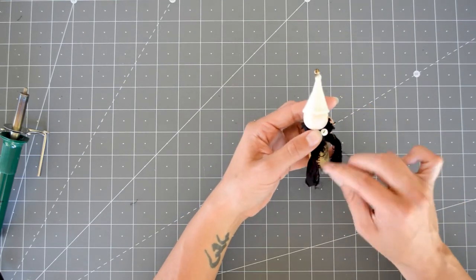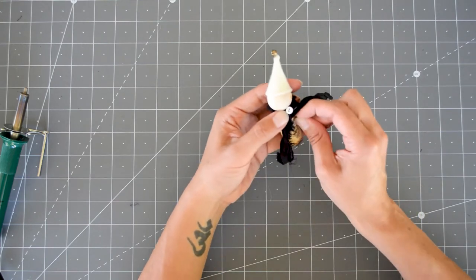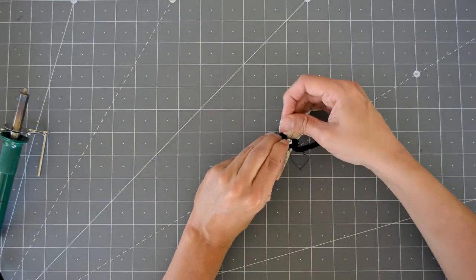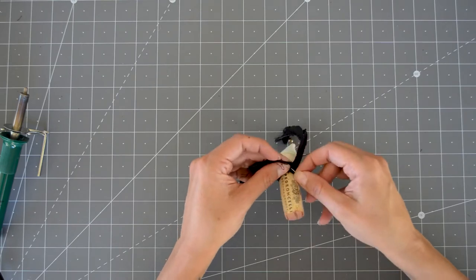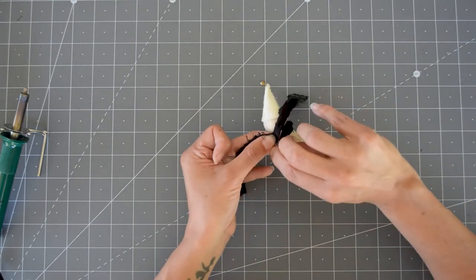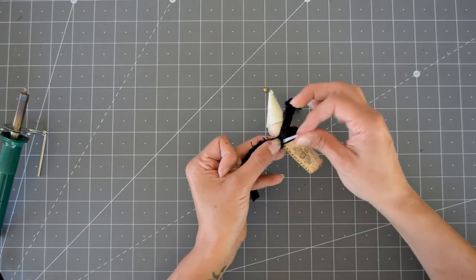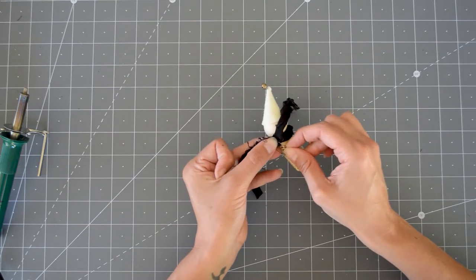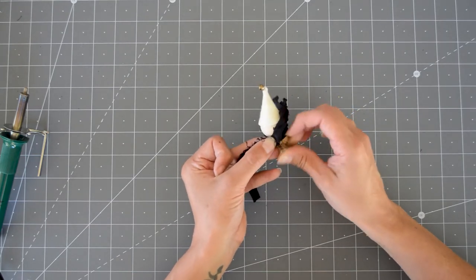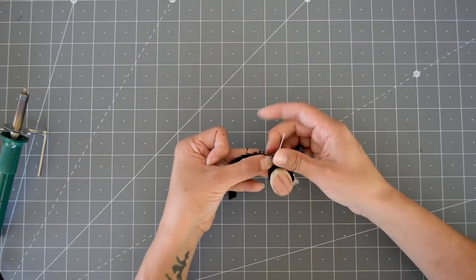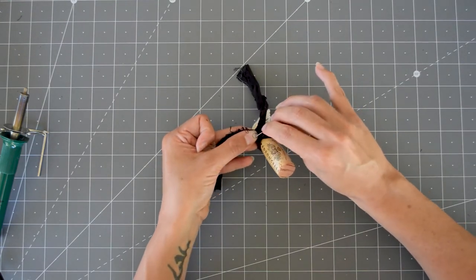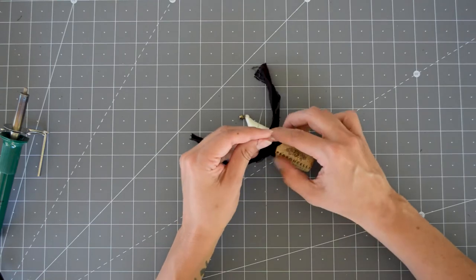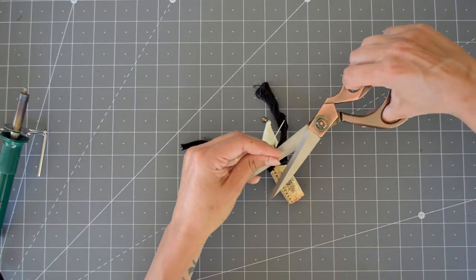And I just do that a couple times, just so I know that it's attached. And then I just secure the back with a knot by just threading it through the thread that's already there. Just realize it's kind of hard to see when it's black on black like this, black thread on black fabric, but that's okay.